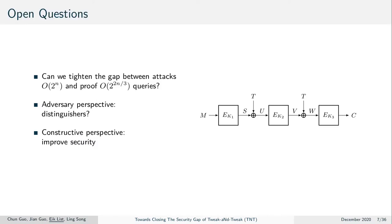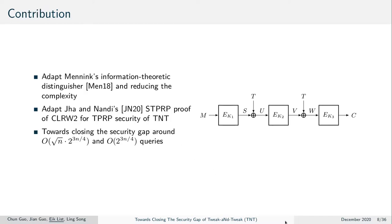The question that arose was whether one could tighten the gap that still existed between having no attacks on the generic instance and having a proof of 2^(2n/3) queries. Two perspectives are relevant: the adversarial perspective — do there exist distinguishers on the generic construction with less than 2^n queries? — and the constructive perspective — can one improve the lower bound from 2^(2n/3) to more queries? In this work, we wanted to close this gap from both sides.